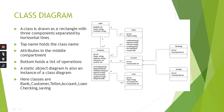The first one is class diagram. A class is drawn as a rectangle with three components separated by horizontal lines. Here the customer is represented as a class diagram. The top compartment holds the class name. Attributes are in the middle compartment, and the bottom holds the list of operations. Here the customer is the name of the class, and the ID, name, address, phone number and account number are the attributes of this class.